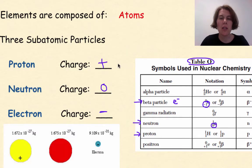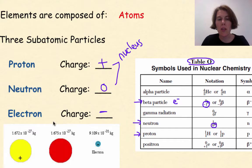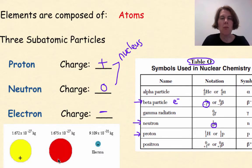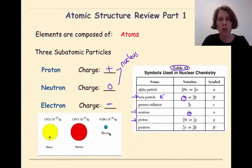Protons and neutrons are found in the nucleus. Electrons are found outside the nucleus. When we look at relative sizes of these subatomic particles, protons and neutrons, while very small, are approximately equal in mass, while electrons are much, much smaller. So again, protons and neutrons have roughly the same mass; electrons are much smaller.